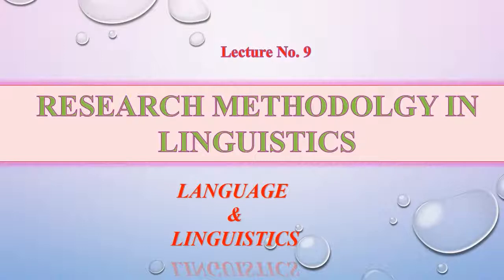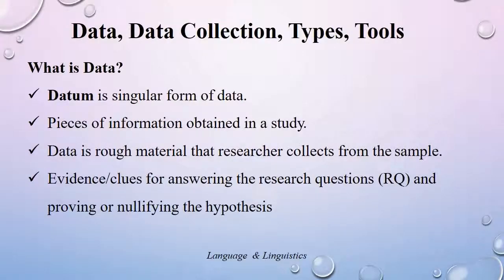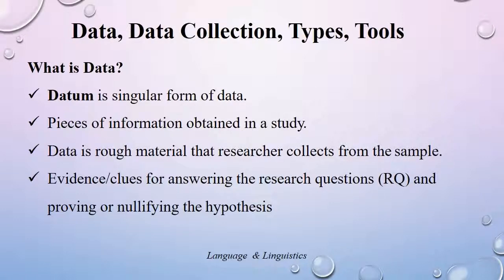Let's talk about data and data collection tools. Data is a plural noun and its singular form is datum. Data is the piece of information that is obtained for conducting a research study, or you can say it's a raw material that a researcher collects from the sample. For data collection, researchers have to do sampling. Data are the clues or evidence for answering the research questions.